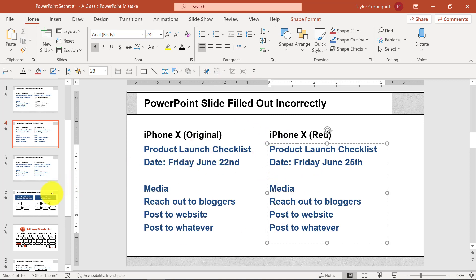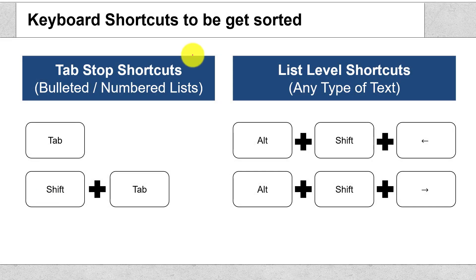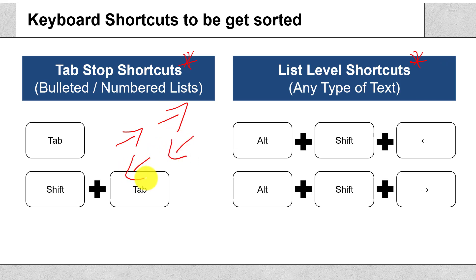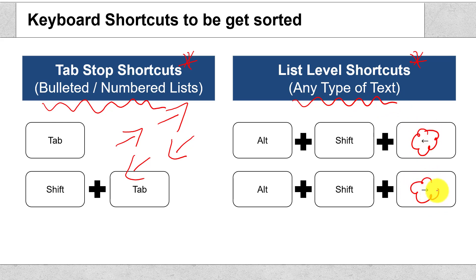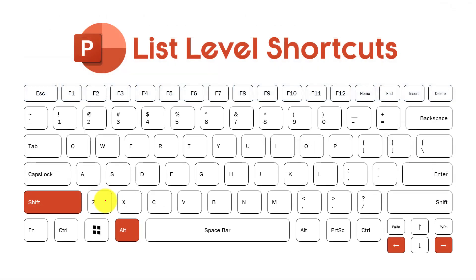This is a classic issue of understanding the difference between two sets of shortcuts: your tab stop shortcuts and your list level shortcuts. Tab, when you're in a bulleted list, will move you forward along the list levels, and Shift+Tab moves you backwards. But this only works with PowerPoint templates when you're in a bulleted or numbered list. The list level shortcuts work with any type of text — Alt+Shift+Left Arrow and Alt+Shift+Right Arrow — to properly set your list levels. I highly recommend learning these keyboard shortcuts.